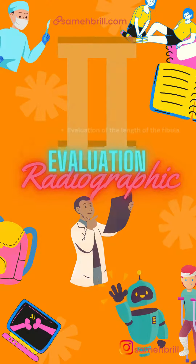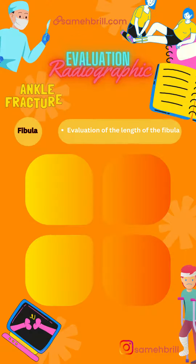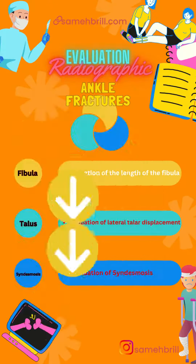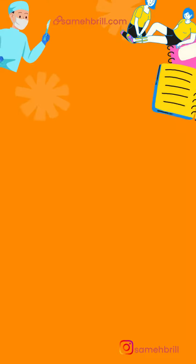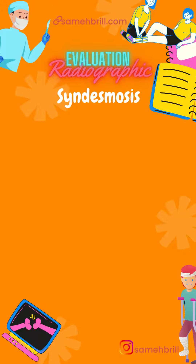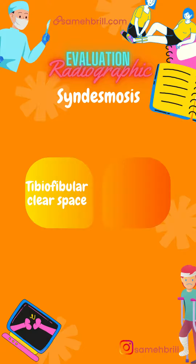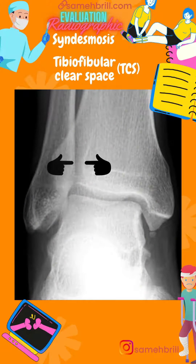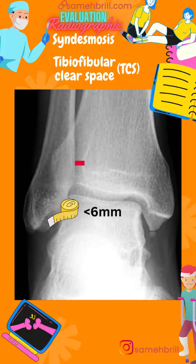In our last reel we discussed how to evaluate the level of the fibula, and this reel will discuss the rest. Let's start with the evaluation of the syndesmosis. There are two parameters: the tibiofibular clear space and the tibiofibular overlap. The tibiofibular clear space is the distance between the posterior tubercle of the tibia and the middle cortex of the fibula. The normal value shouldn't exceed six millimeters.